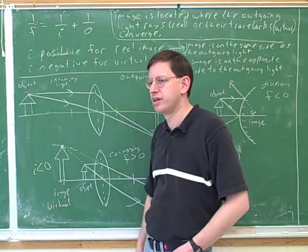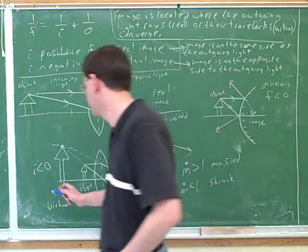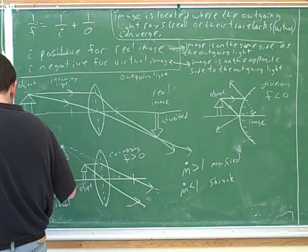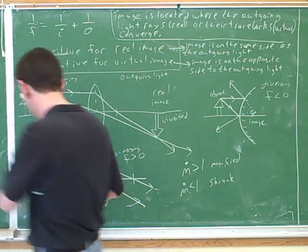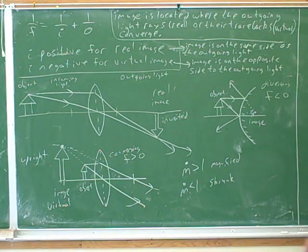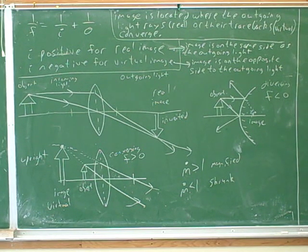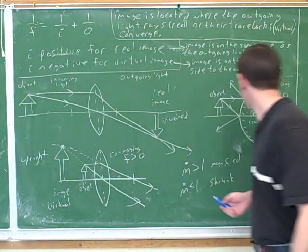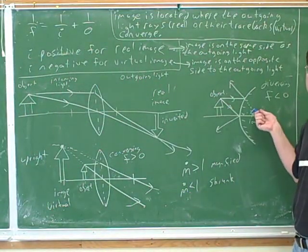How about this image — upright or inverted? It has the same orientation to the axis, so here we have an upright image. And how about this image? It's upright, because both the image arrow and the object arrow are pointing up from the axis.